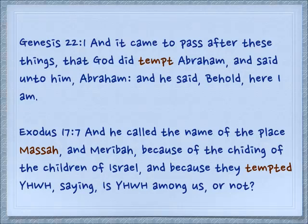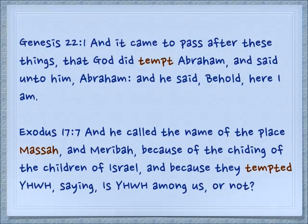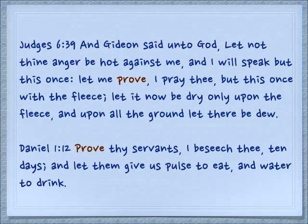In Exodus 17:7 — and he called the name of the place Masa, which is also linguistically related to this Nisa, Nasa, to try. And Merivah, because of the chiding of the children of Israel, because they tempted Yehovah, saying is Yehovah among us or not. I recommend to you the commandment in Deuteronomy 6:16 — do not put Yehovah your God to the test as you did at Masa. Here is another test, Judges 6:39 — and Gideon said unto God, let not thine anger be hot against me, and I will speak but this once; let me prove I pray thee but this once with the fleece — let it now be dry only on the fleece and upon the ground let there be dew. So he put up a test for himself to see what was the will of Yehovah.